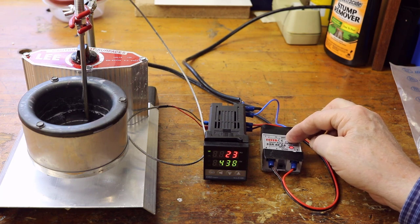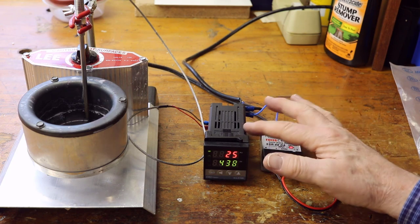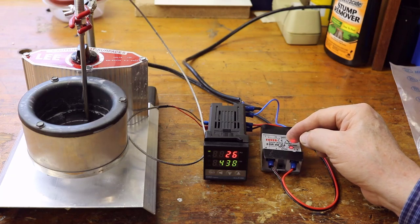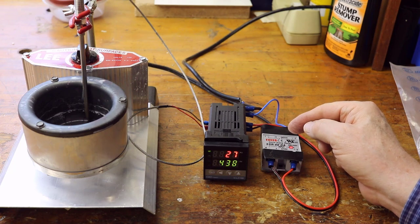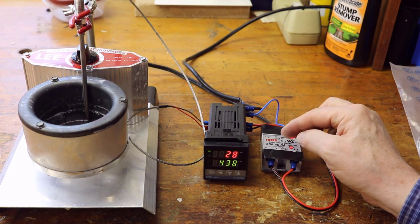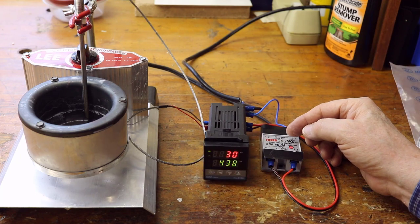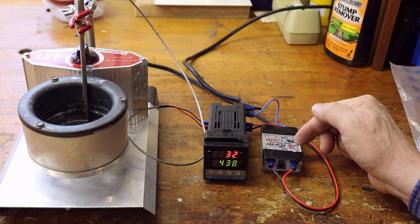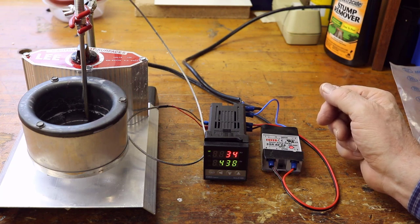Now this is a solid state relay, and it's a 40 amp version, and that came with the controller for the 14 bucks. A lot of people say that you need a heat sink for the solid state relay. Apparently that's not the case. We were only drawing about four amps over here in the melting pot, and this is a 40 amp relay, and for 14 bucks the controller and the relay, not a bad deal.